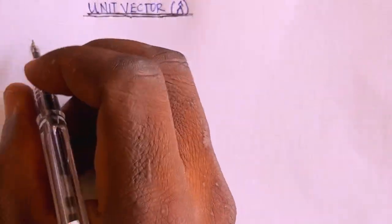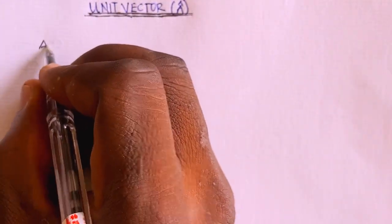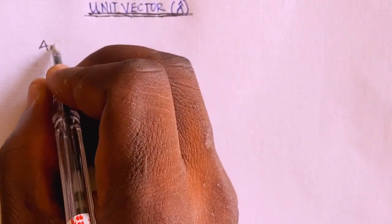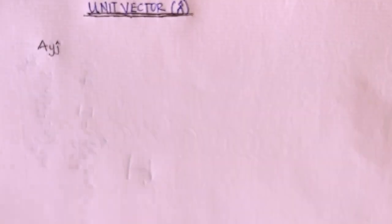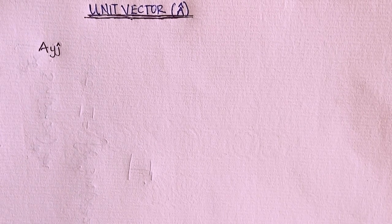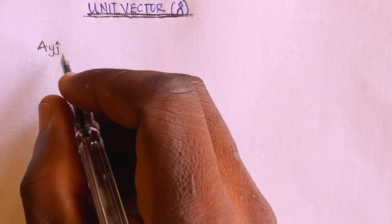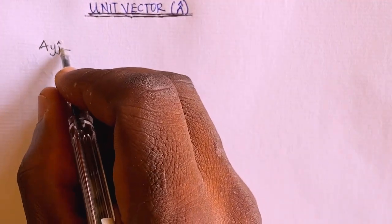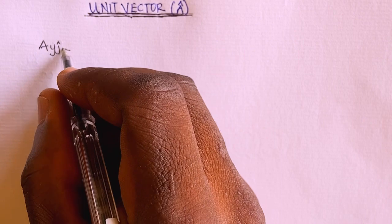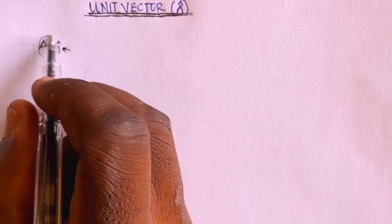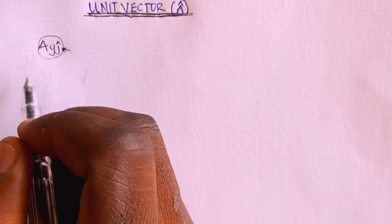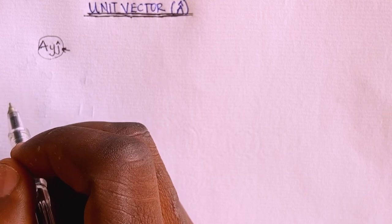Suppose I am having a vector a_y_j. In this case, what is the unit vector? The unit vector is taken to be the j. So since the j is here, that means everything here is actually called the unit vector.